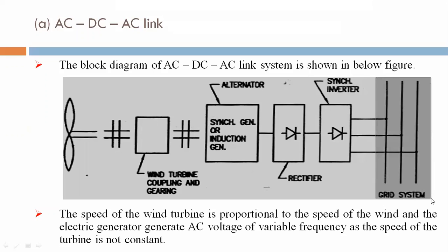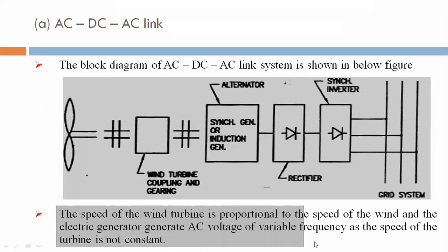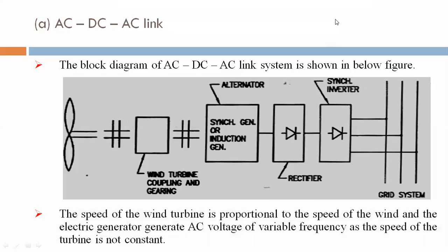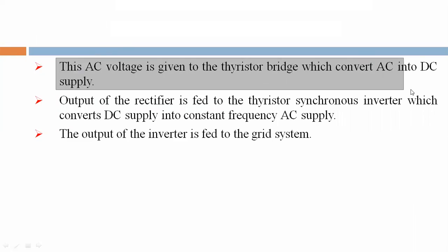Now we are seeing the step-by-step functioning of this block. The speed of the wind turbine is proportional to the speed of the wind, and the electric generator generates AC voltage of variable frequency as the speed of the turbine is not constant. This AC voltage is given to the thyristor bridge which converts AC into DC supply.